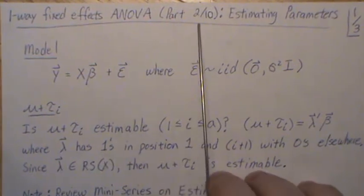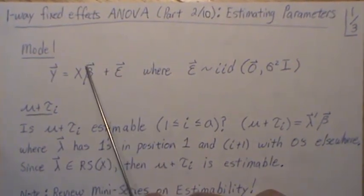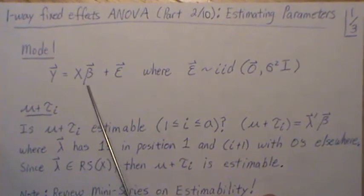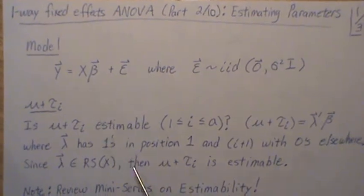In here, if you go to part one, β is filled with parameters μ, τ₁, τ₂, all the way to τₐ. And we want to estimate these parameters.